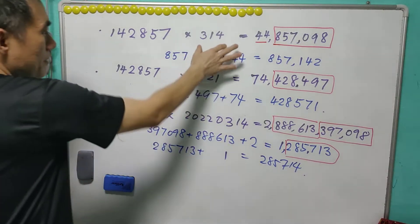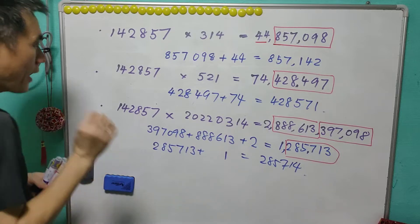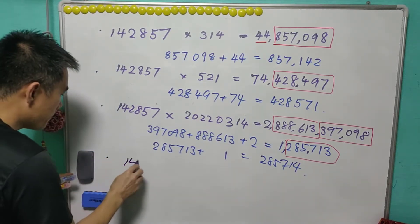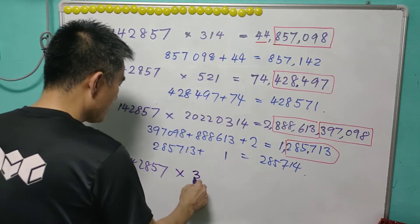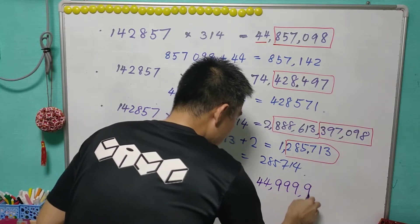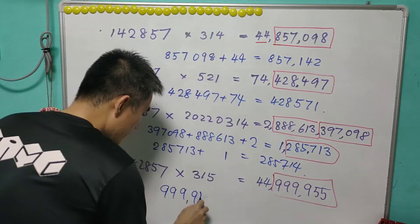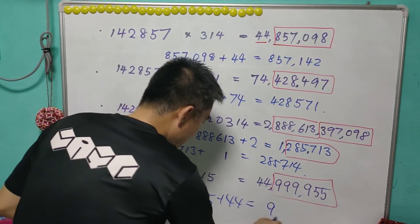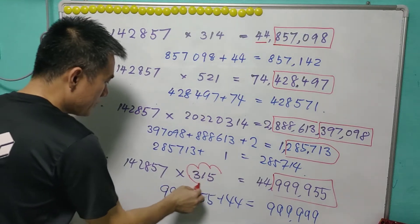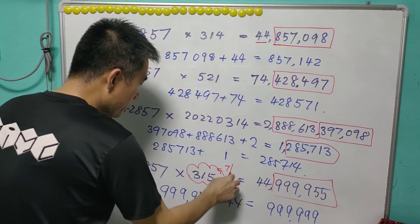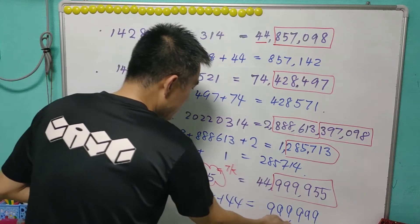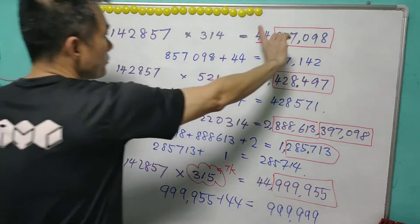You can try this for any number you like, but there are some exceptions. The exception happens when the multiplier is a multiple of 7 — for example, 315. After calculation we get 44999955, and after the same operation we get 999999. So whenever the multiplier is a multiple of 7 you get 999999; otherwise you get a permutation of 142857.